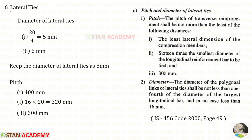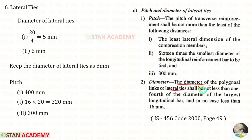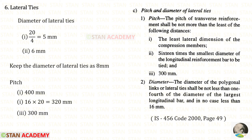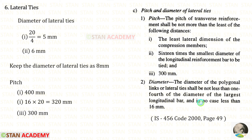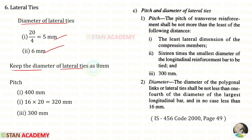Now let us design the lateral ties. Opening the code book page 49: the diameter of lateral ties shall not be less than one-fourth of the diameter of the largest longitudinal bar, and in no case less than 6 millimeter. Our longitudinal bars are 20 mm diameter, so one-fourth = 20/4 = 5 mm. Since 5 mm is less than 6 mm, the minimum governs. We keep the diameter of lateral ties as 8 millimeter.